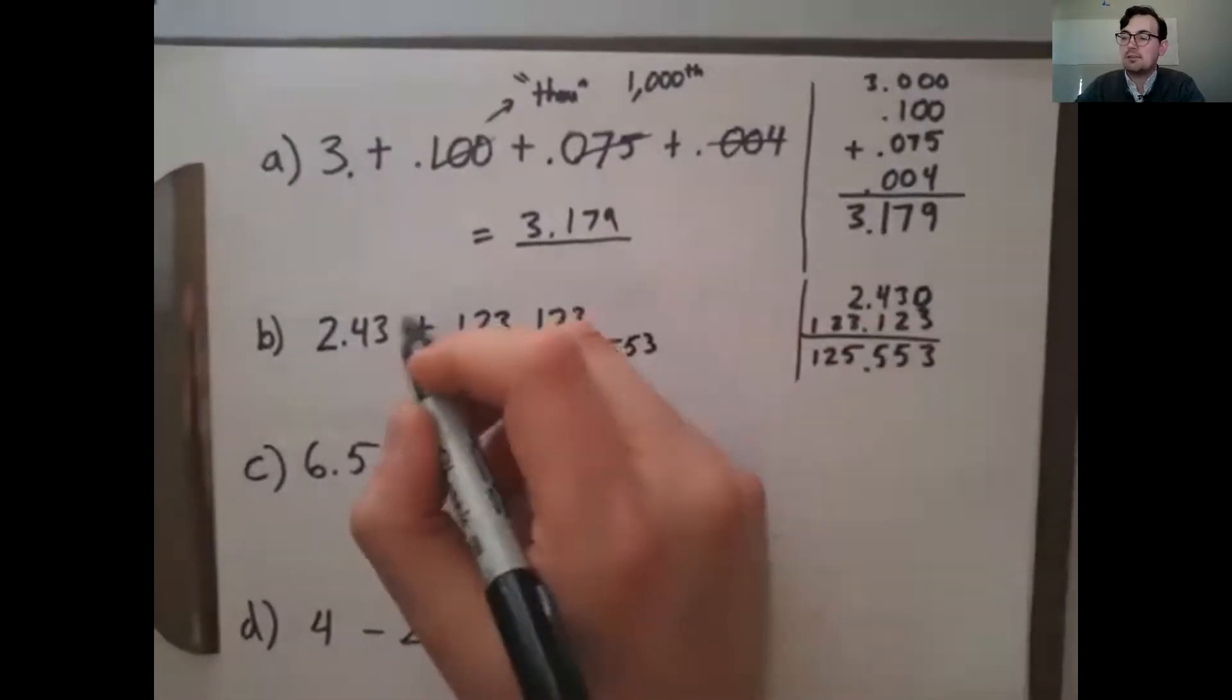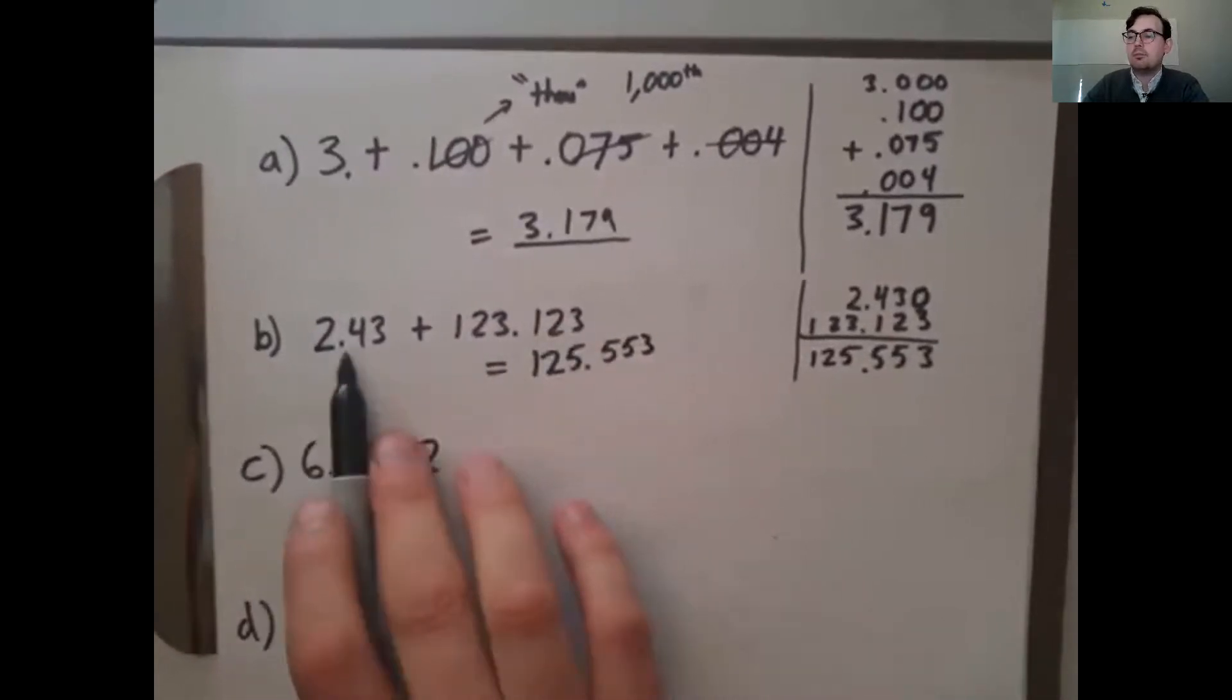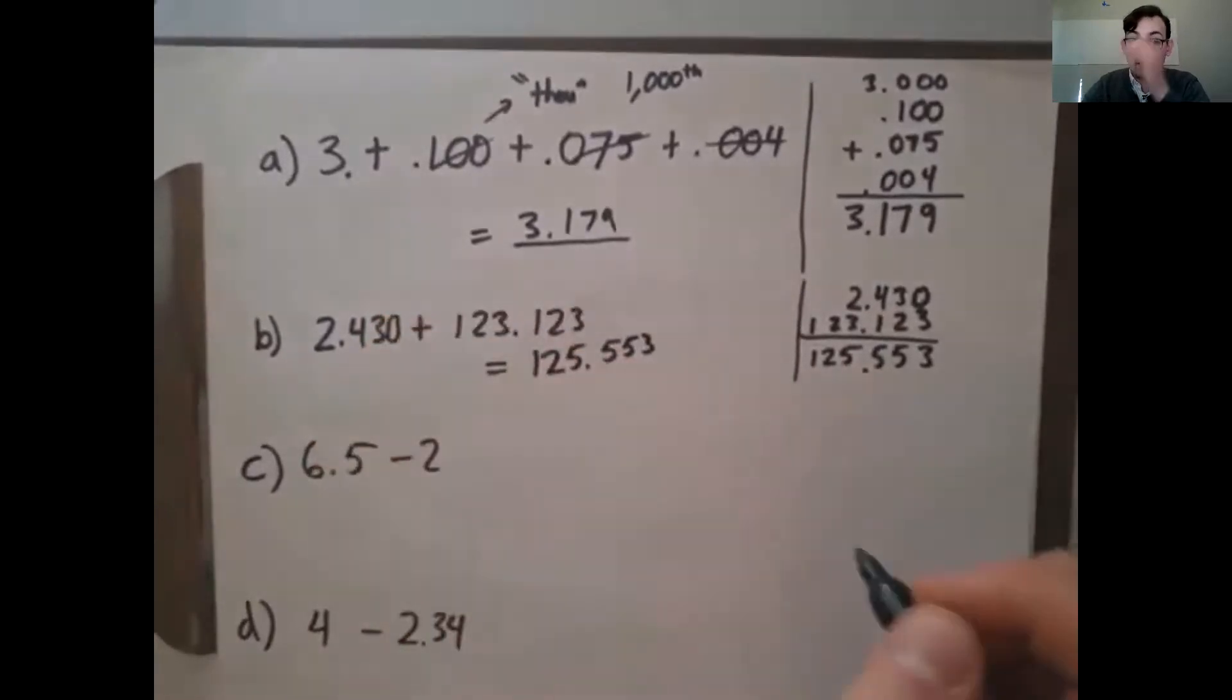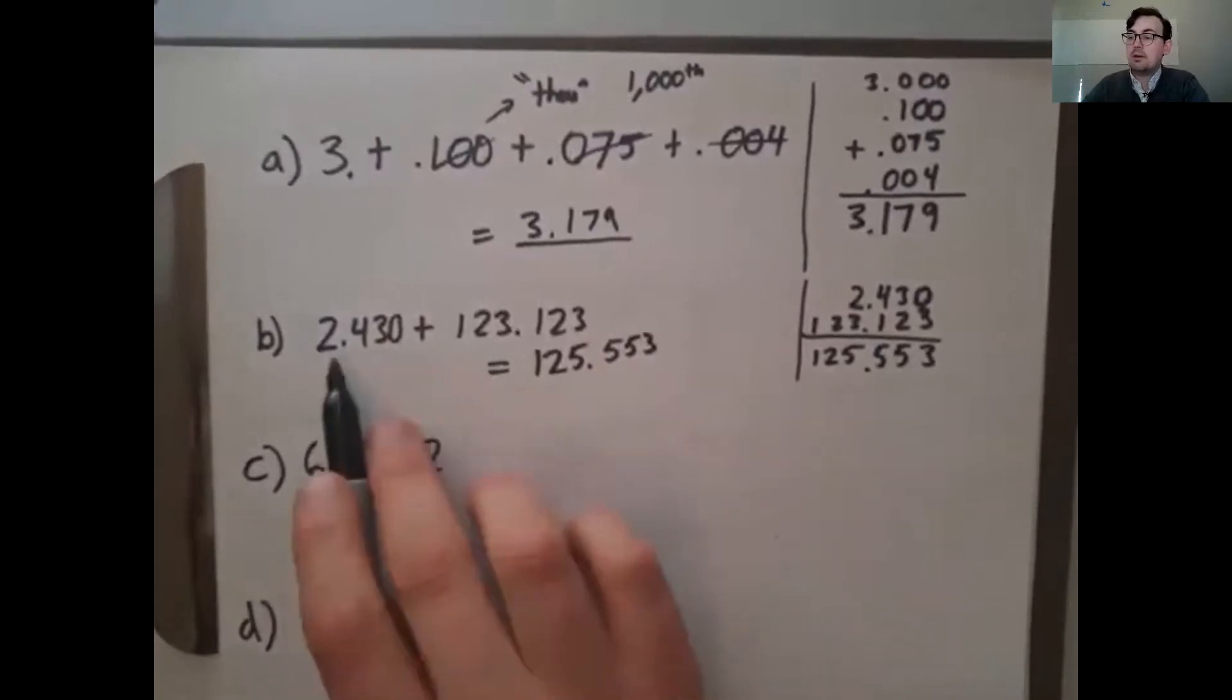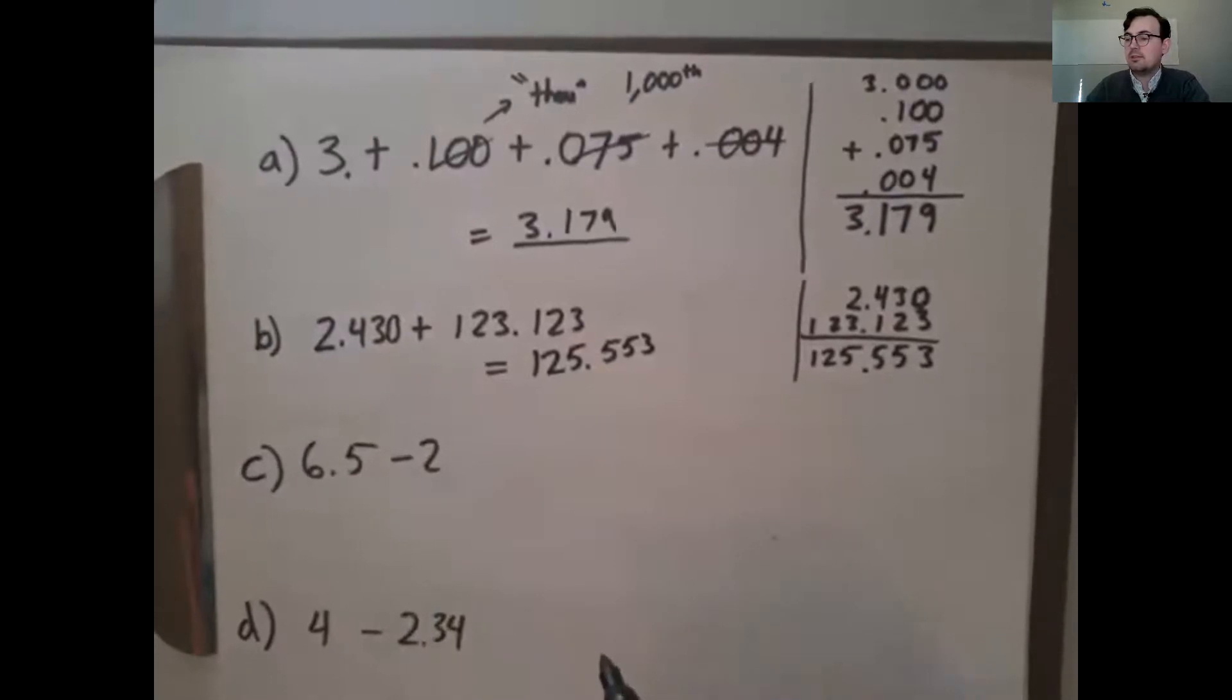Now, I could also add the zero here if that made more sense and make this all thou. It would be 123 thou plus 430, if I add the zero there. And you could add it up, adding the number parts, 2 and 123, and adding the thou parts separately. That's totally up to you.